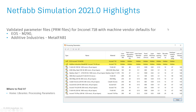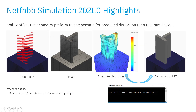Moving from metal powder bed fusion to directed energy deposition, there have been improvements there as well. In the past, we had the ability to create a compensated shape based on distortion for metal powder bed fusion. We've now taken that technology and made it available for directed energy deposition simulations. Whenever you bring your toolpath for the robot and simulate a directed energy deposition run, the software can take that distorted geometry and create a compensated STL, allowing you to create a new toolpath that minimizes distortion in the DED simulation.